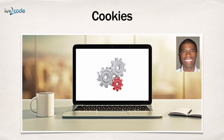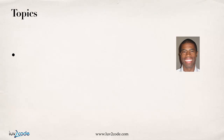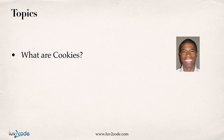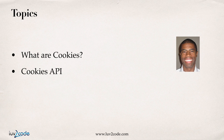Hello. In this video, we're going to learn how to use cookies with JSP. We'll cover the following topics: first, what are cookies and how we can use them, and then we'll explore the cookies API and learn how to write code for reading and writing cookies. We have a lot of good things in store, so let's go ahead and get started.